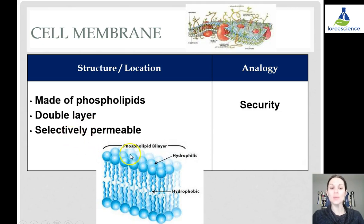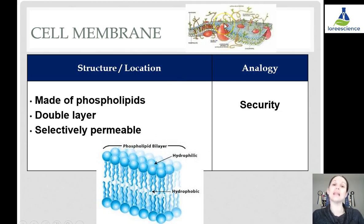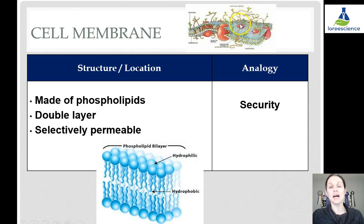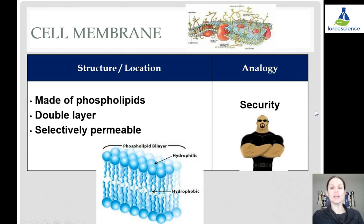The cell membrane is selectively permeable — based on charge or size, some molecules can get through. The cell membrane also has molecules embedded in it, such as proteins that allow certain molecules through like glucose, certain sugars, or hormones. There are also proteins, fats, and other things embedded in it to allow for signaling. In terms of the factory analogy, the cell membrane is like security guards — allowing some things in but keeping some things out.